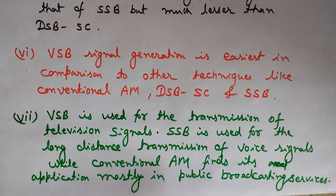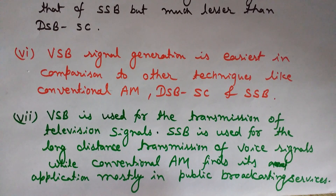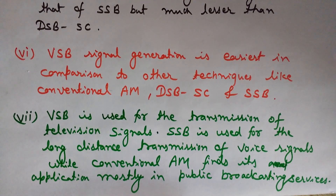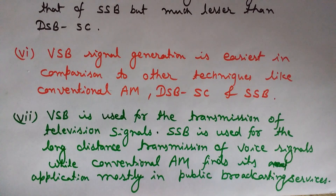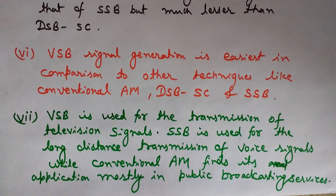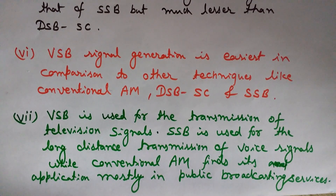This completes the comparative study of four amplitude modulation schemes: conventional AM, double sideband suppressed carrier, vestigial sideband, and single sideband. Hope you enjoyed the video and got information about these schemes, their applications, and their merits and demerits. In the next video we will see all these schemes in more detail, so keep watching Engineering Made Easy.